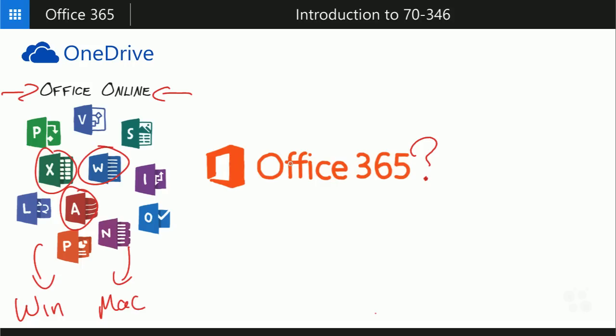Office 365 is more than just Microsoft Office products. OneDrive is a file sharing mechanism in the cloud so you can save and retrieve files easily from any device. Microsoft Office 365 also offers SharePoint Online, which allows you to roll out a powerful and flexible SharePoint implementation without the complication of spinning up and hosting your own SharePoint servers. SharePoint Online means you don't have to worry about that complexity — you can just start spinning up SharePoint sites and sharing content through Office 365.